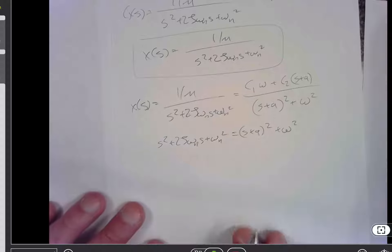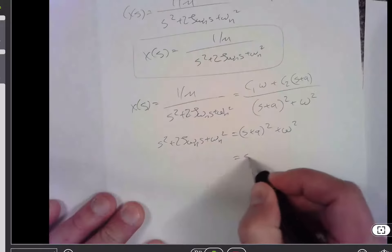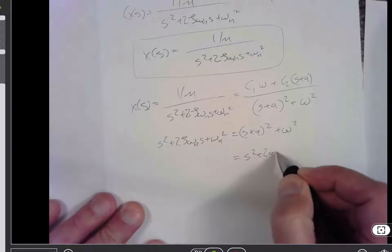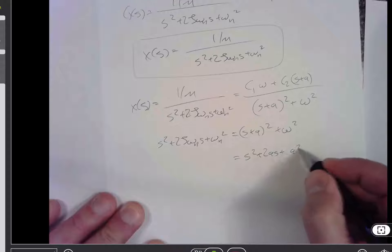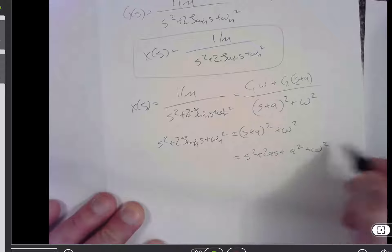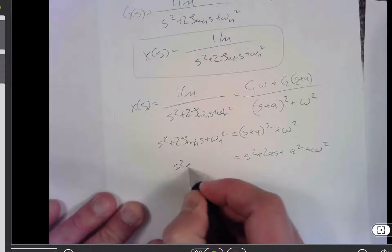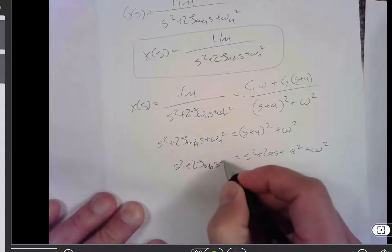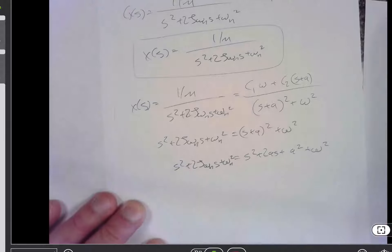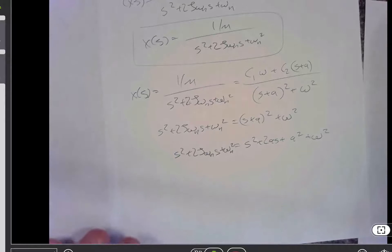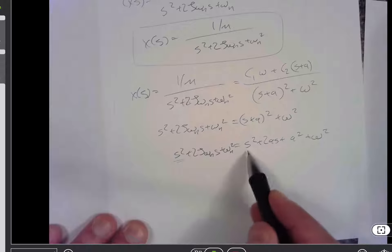Then I'm going to multiply this term out, and I'm going to get s squared plus 2 a s plus a squared, and then I still have this plus omega squared hanging on from the previous line. And if this is true, then it has to be true for every coefficient of s. And so I've got an s squared is equal to s squared.